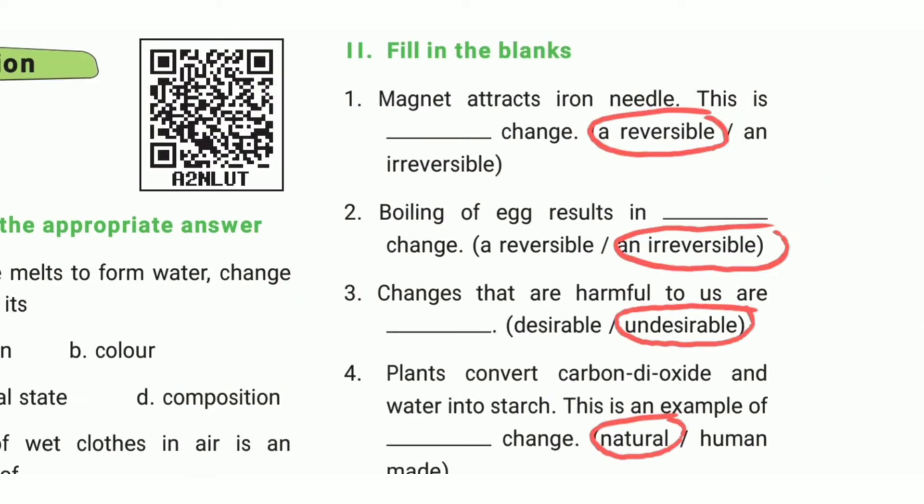Fill in the blanks. First one: a magnet attracts an iron needle - this is a reversible change. Second one: boiling of egg results in - the answer is irreversible change.